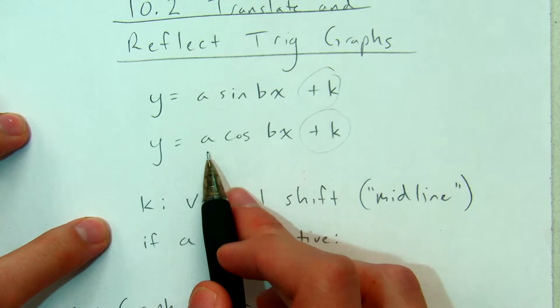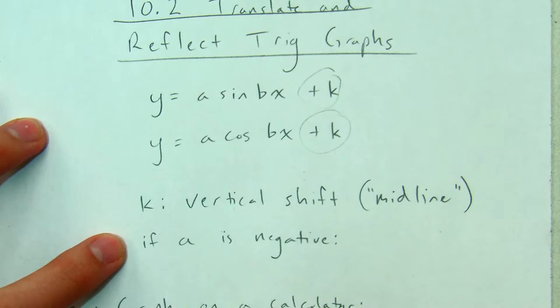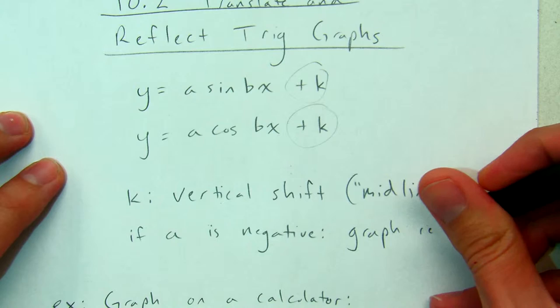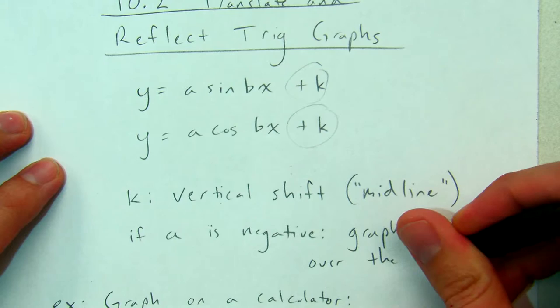The other thing that we're going to see in this section is we're going to start seeing values of a that are negative. In the last section, they were all positive. If a is a negative number, then the graph reflects over the midline.